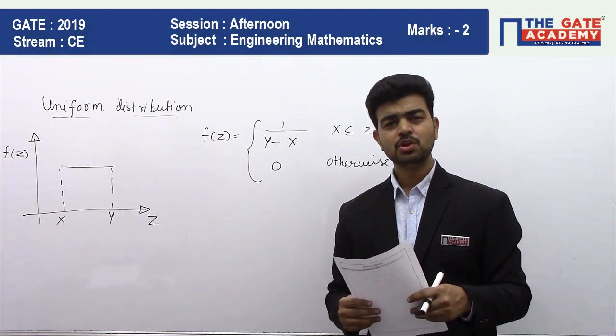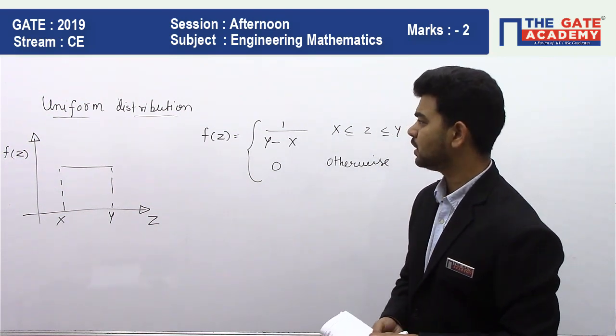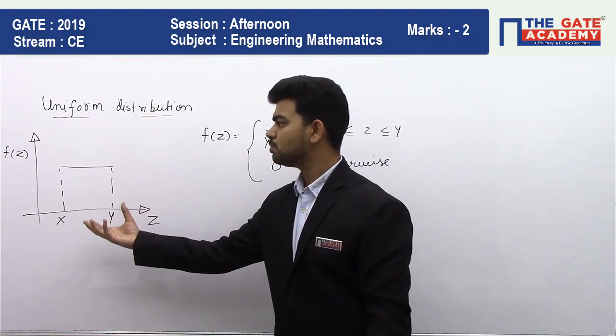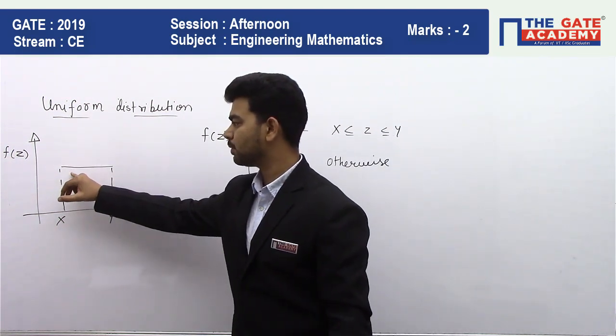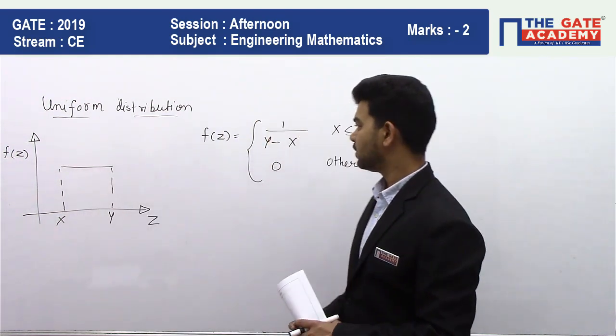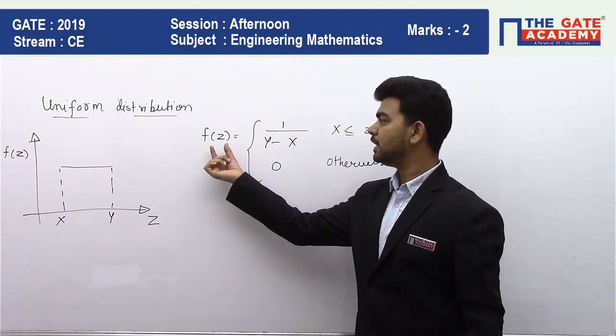So here we know the theory of uniform distribution. If we see, our uniform distribution is plotted like this. It is just a constant line; there is a uniform weightage of the probability density.